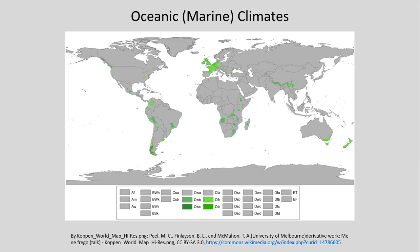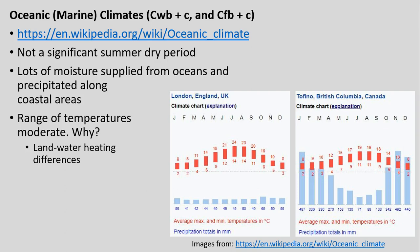Similarly, oceanic or marine climates are very similar to Mediterranean and humid subtropical types, but without the significant summer dry period. More constant moisture throughout the year — whether fairly low but constant, or with more seasonal variation. There's less temperature variation throughout the year because of that latent heating effect. We see lots of moisture being supplied in these areas because they're generally along coastal areas.